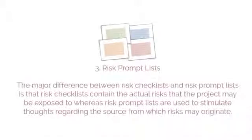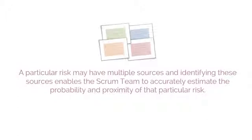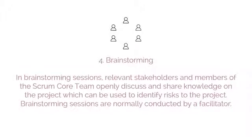The third technique is Risk Prompt Lists. The major difference between Risk Checklists and Risk Prompt Lists is that Risk Checklists contain the actual risks the project may be exposed to, whereas Risk Prompt Lists are used to stimulate thoughts regarding the sources from which risks may originate. A particular risk may have multiple sources, and identifying these sources enables the Scrum team to accurately estimate the probability and proximity of that risk. The fourth technique is brainstorming. In brainstorming sessions, relevant stakeholders and members of the Scrum core team openly discuss and share knowledge on the project, which can be used to identify risks. Brainstorming sessions are normally conducted by a facilitator.